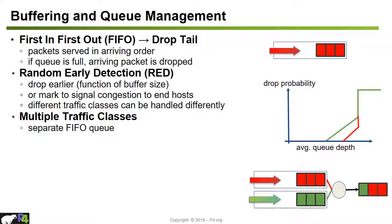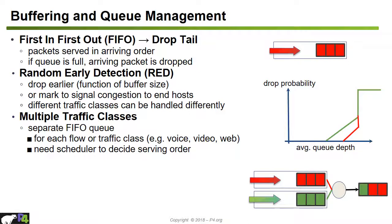In a normal switch with multiple service classes, we have multiple queues to segregate traffic. For example, voice flows have one queue, video flows have another, and web traffic has its own queue. With more than one queue, a scheduler is needed to decide the serving order. In the example shown, a red queue for voice packets and a green queue for video packets are served by a scheduler — in this case, two red packets are served before one green packet.